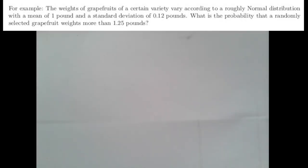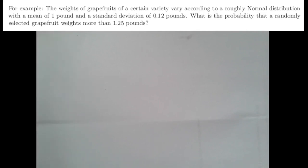In this problem we have a variety of grapefruit that is roughly normally distributed with a mean of one pound and a standard deviation of 0.12 pounds. Our job is to find out what is the probability that a randomly selected grapefruit will weigh more than 1.25 pounds. Let's begin by drawing a picture.